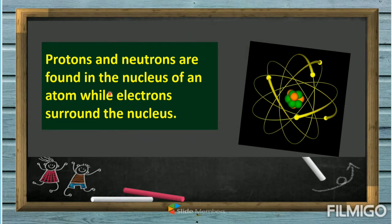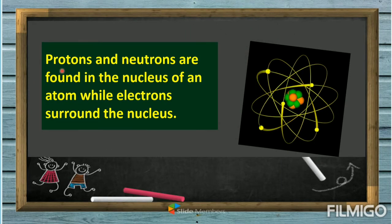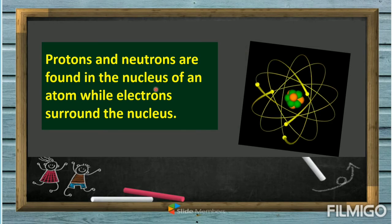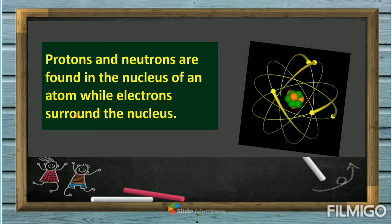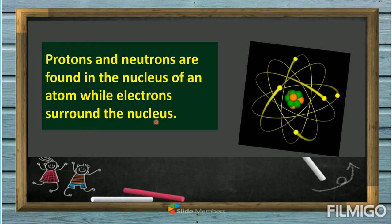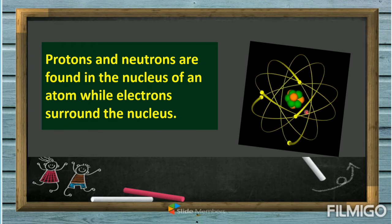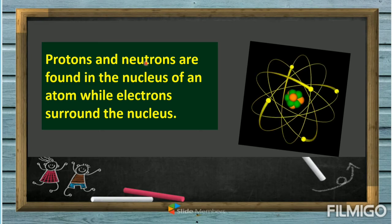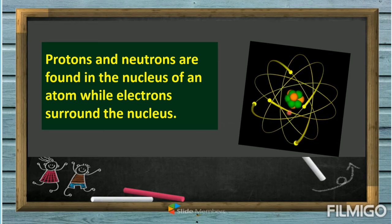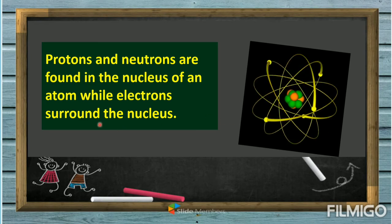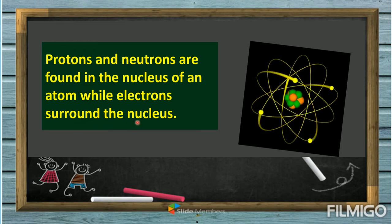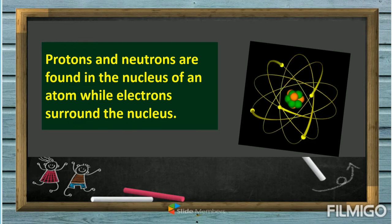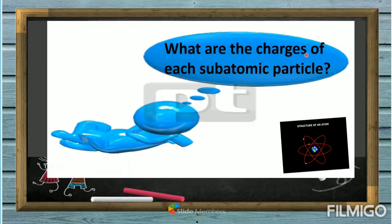As I mentioned, protons and neutrons are found in the nucleus of an atom, while electrons surround the nucleus. This diagram shows the nucleus at the center, with proton and neutron particles inside it, and electrons surrounding the nucleus on the outside.